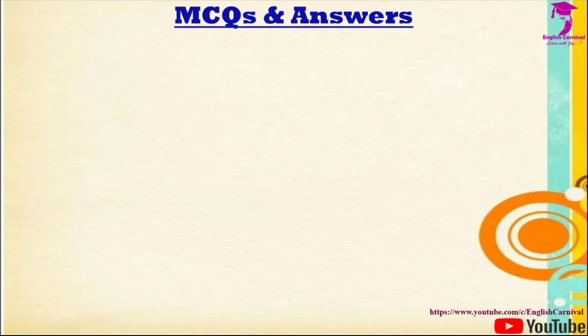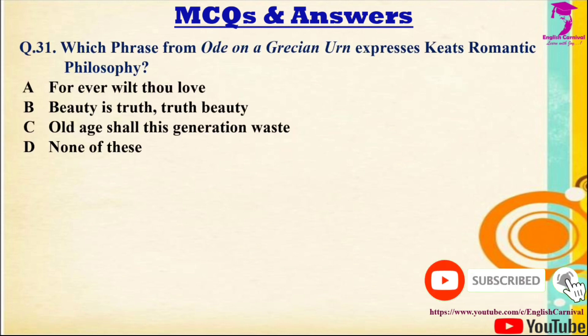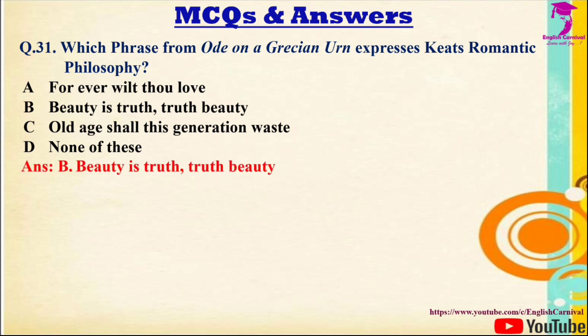Question 31: Which phrase from Ode on a Grecian Urn expresses John Keats's Romantic philosophy? Options: A) 'Forever wilt thou love', B) 'Beauty is truth, truth beauty', C) 'Old age shall this generation waste', D) None of these. The correct answer is B — 'Beauty is truth, truth beauty.'